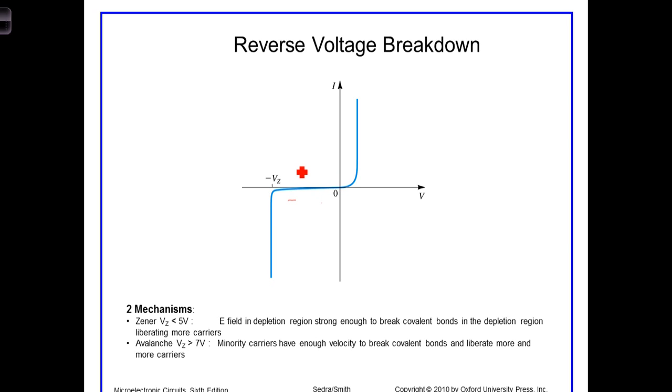Continuing to increase the reverse bias voltage leads to a point where the diode breaks down and a significant reverse current begins to flow. Generally this doesn't irreversibly damage the diode, but it is possible to burn it out if you get too much current flowing through the diode and it just literally burns out.